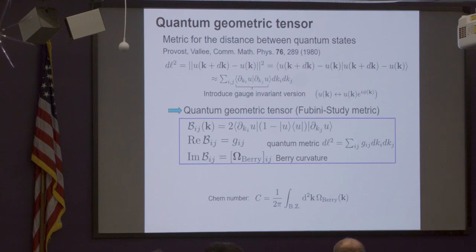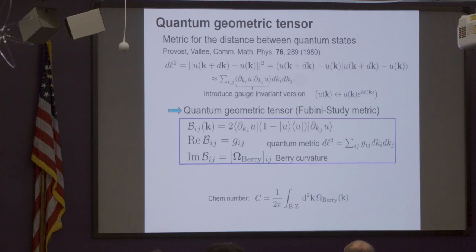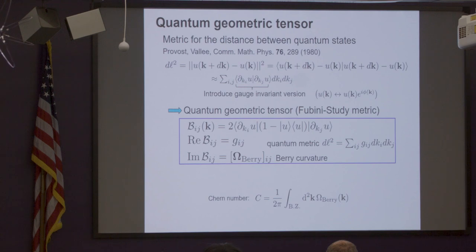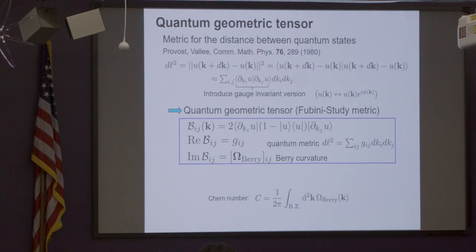The imaginary part is actually the Berry curvature — something that you have heard of many times. This goes also under another name because Fubini and Study investigated it already in the beginning of the last century in a purely mathematical context, but I think in quantum mechanics it became known through this work. The quantum metric, however, has become popular only recently.